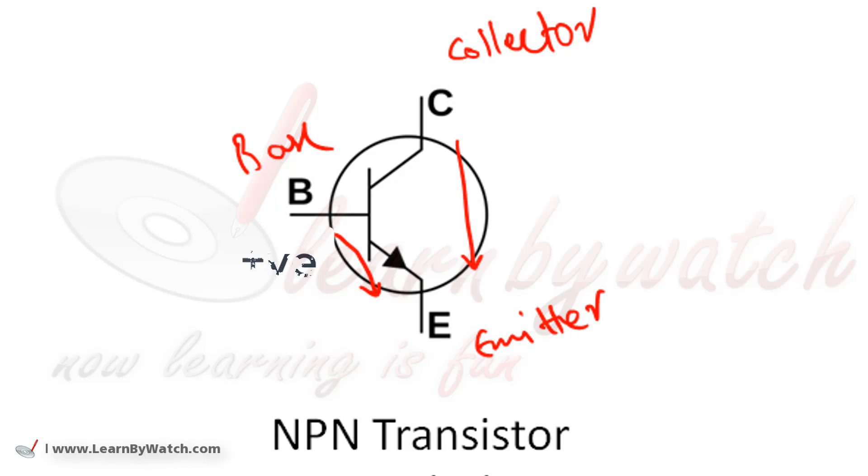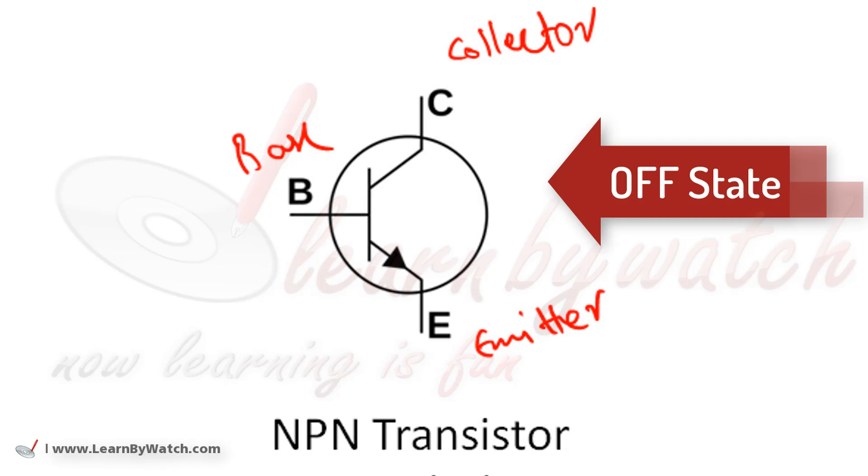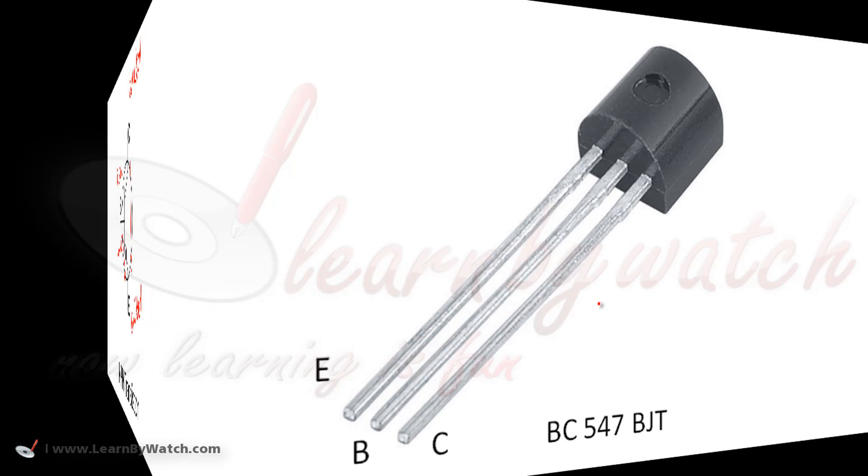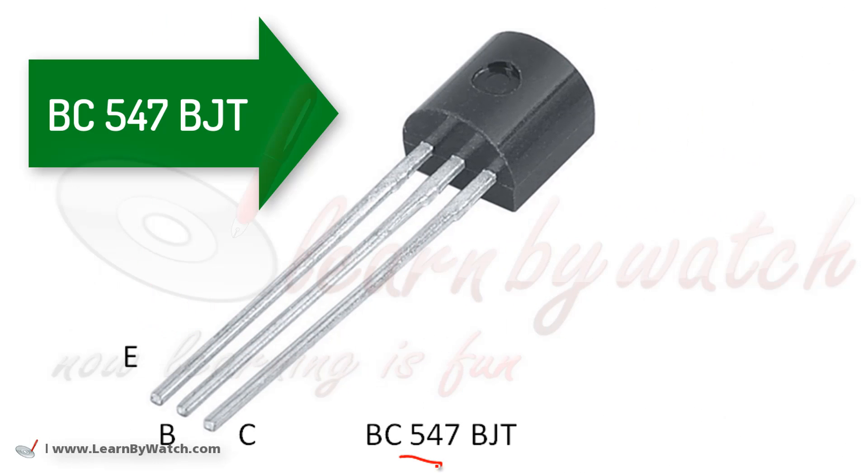And if the base is not given a positive voltage, current will not flow from collector to emitter or base to emitter. So, this state is called the OFF state of the BJT. This is the BC547 BJT.